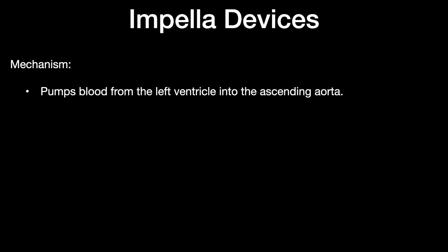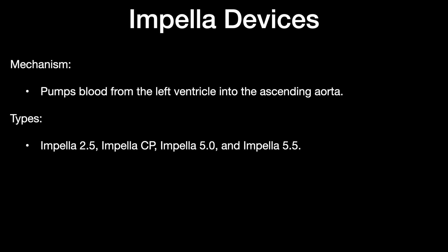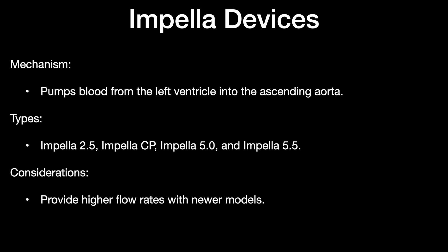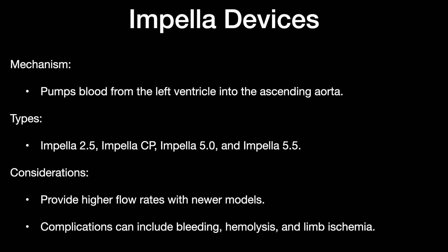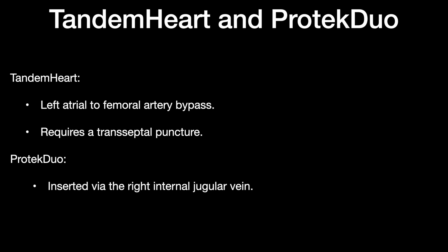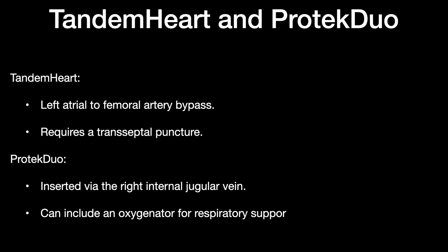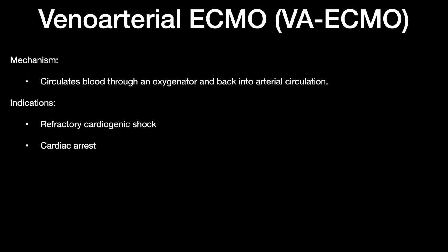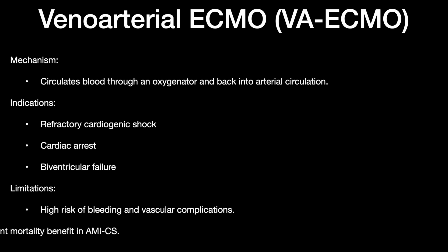The Impella device pumps blood from the left ventricle into the ascending aorta; various types are available based on flow rate, with higher flow in newer models. Complications include bleeding, hemolysis, and limb ischemia. The Tandem Heart provides left atrial to femoral artery bypass and requires a transseptal puncture. The PROTECT DUO is inserted via the right internal jugular and can include an oxygenator for respiratory support. The VA-ECMO circulates blood through an oxygenator and back into the arterial circulation, indicated for refractory cardiogenic shock, cardiac arrest, and biventricular failure, though with high risk of bleeding and vascular complications. Recent trials show no significant benefit in acute MI.